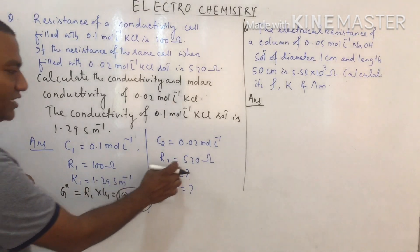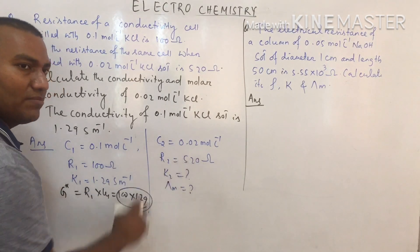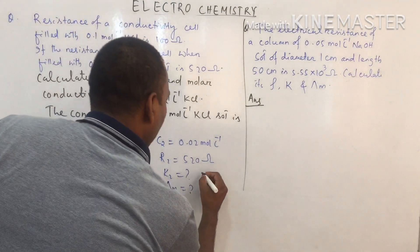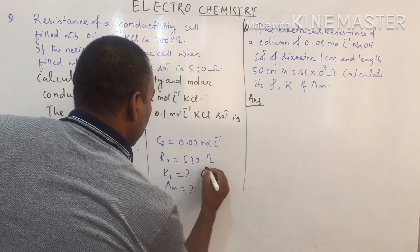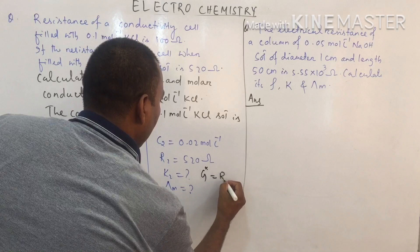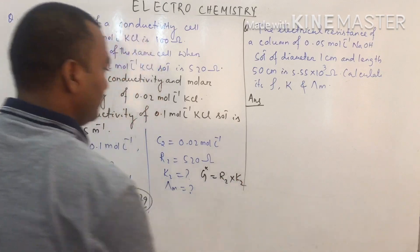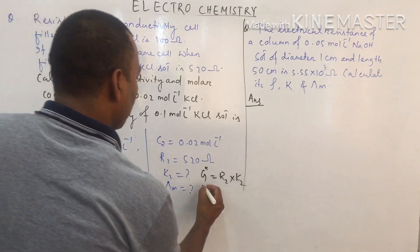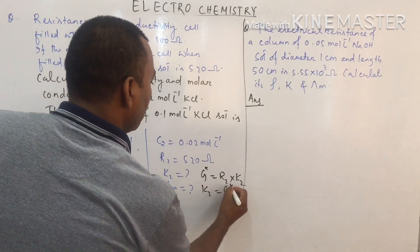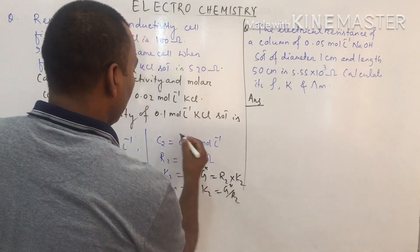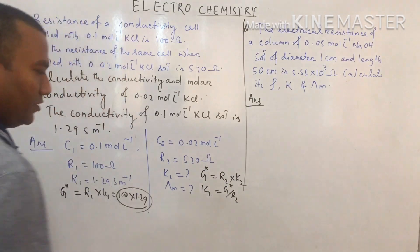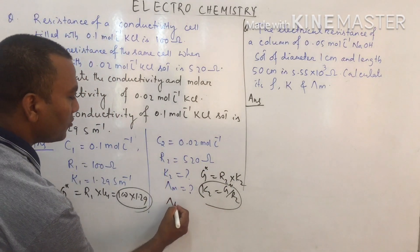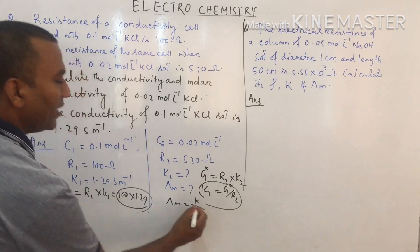G* is the same because only the concentration changes, not the cell. So G* = R₂ × κ₂, which gives κ₂ = G* / R₂. After calculating κ₂, molar conductivity is found using λm = κ / C.